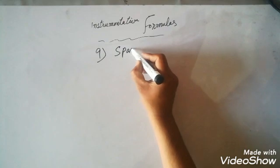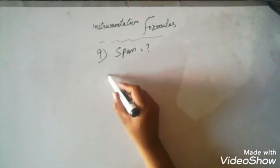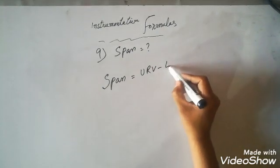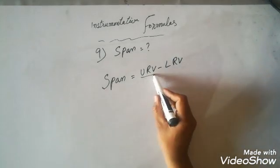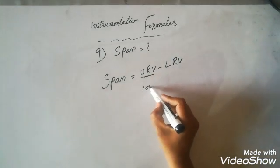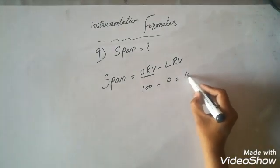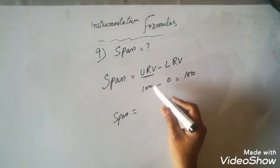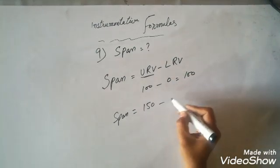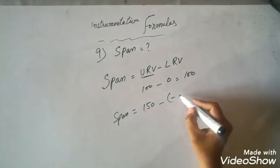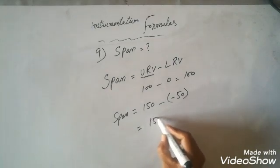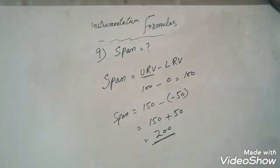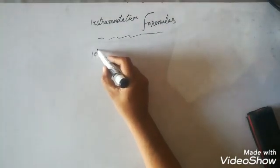Our next formula is about the span. This is very easy: Span = URV − LRV, where URV is the upper range value and LRV is the lower range value. Suppose URV is 100 and LRV is 0, then span is 100. Another example: URV is 150 and LRV is −50, so span = 150 − (−50) = 200.